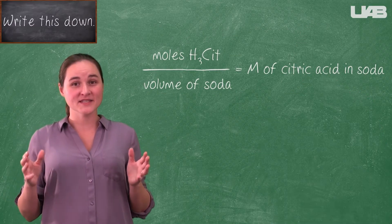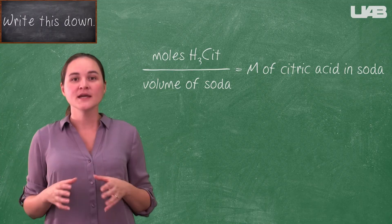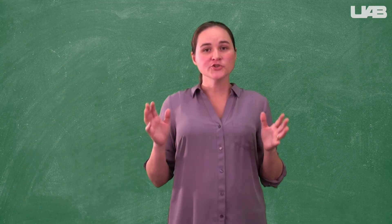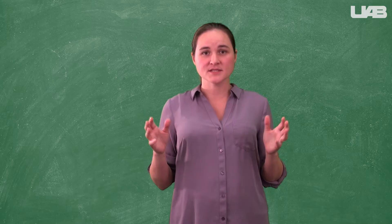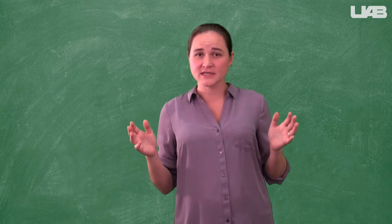Now, to get the molarity of the citric acid in your sample, you simply divide by the volume of the soda you measured. You should consider how this concentration compares to other common acids that you consume on a daily basis.